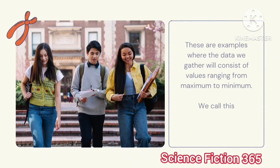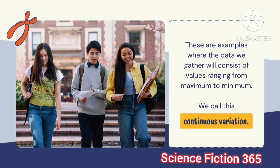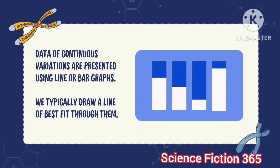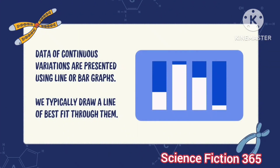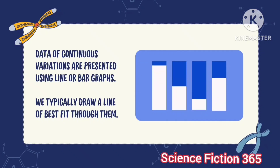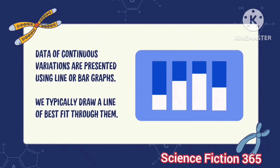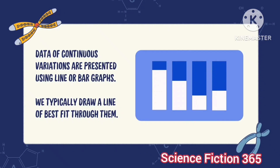These are examples where the data we gather will consist of values ranging from a maximum to a minimum — we call this continuous variation. Data on continuous variation is presented using line graphs or bar graphs, and we typically draw a line of best fit through them.